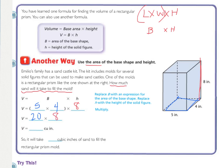20 times 8 equals 160 cubic inches. So it will take 160 cubic inches of sand to fill the rectangular prism mold. The other way to write 160 cubic inches is 160 IN with an exponent 3, because we've multiplied three dimensions.